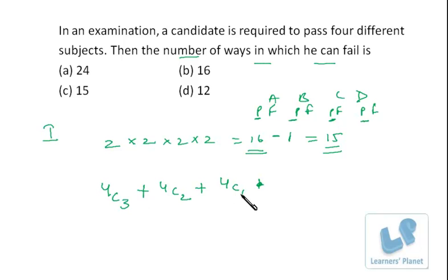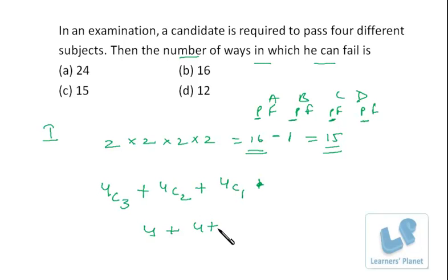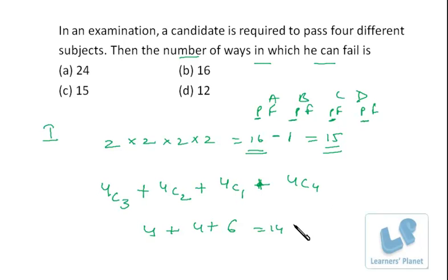The total calculation: 4C3 = 4C1 = 4; plus 4C2 = (4×3)/2 = 6; plus 4C1 = 4; and the case where he fails all four subjects is 4C4 = 1. So: 4 + 6 + 4 + 1 = 15.